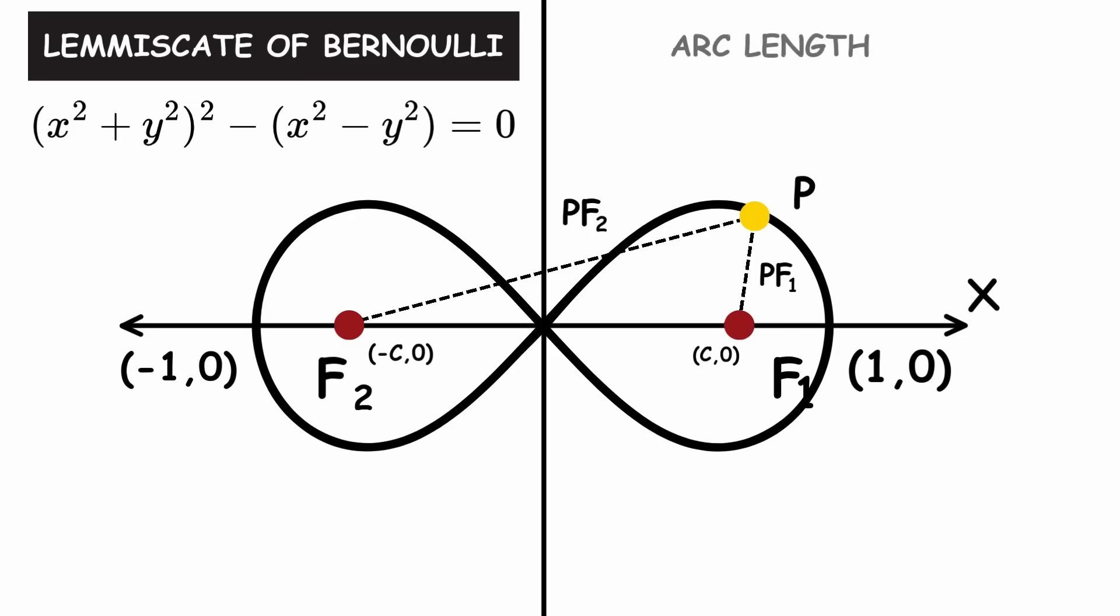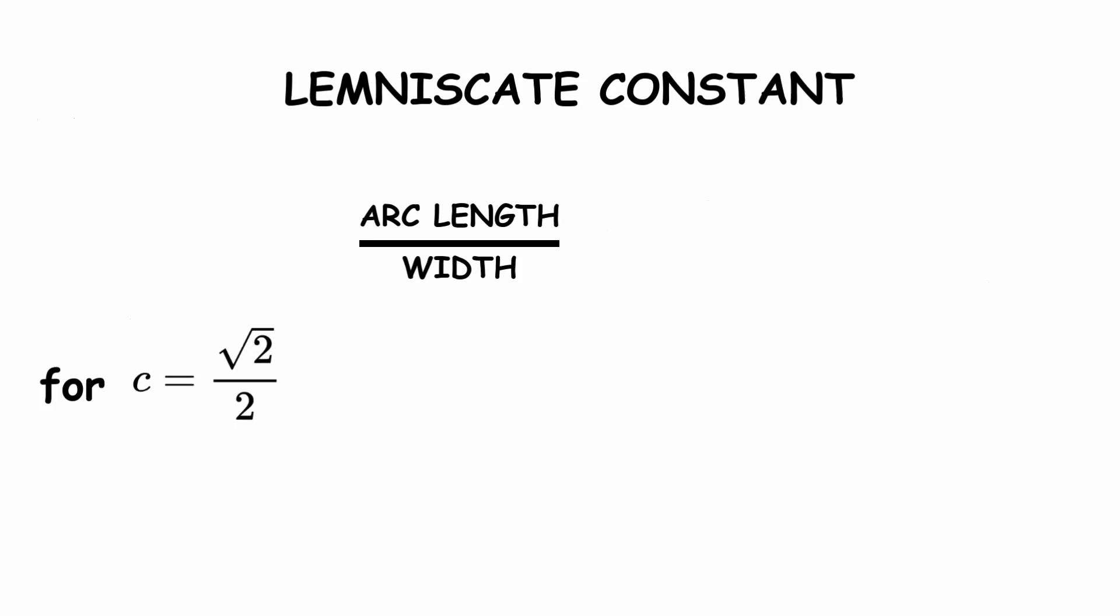If we take the arc length of this Lemniscate, the distance along the entire curve, and divide it by its width, we get a number known as the Lemniscate constant, about 2.62. This is denoted by a cursive Greek letter pi. It is equal to half the Lemniscate's arc length.